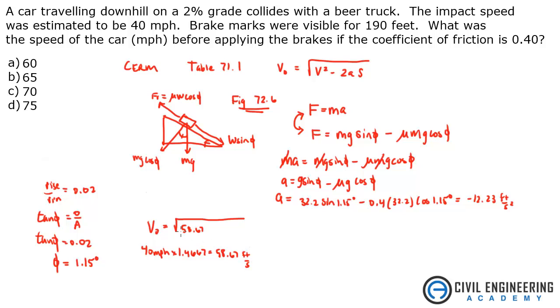Plug that in here. 58.67 squared minus 2 times negative 12.23 feet per second squared times the distance of 190 feet. You can see the units here. You're going to get feet squared per second squared. This will also be feet squared per second squared. Solve this. What do you get? I get 89.9 feet per second.